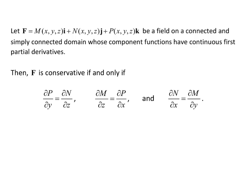So what that's saying is the derivative of the k component with respect to y has to equal the derivative of the j component with respect to z. The middle one is the derivative of the i component with respect to z has to equal the derivative of the k component with respect to x. And the last equality is saying the derivative of the j component with respect to x equals the derivative of the i component with respect to y. So if all three of those equalities hold, then your field is conservative.